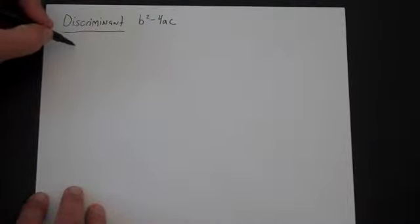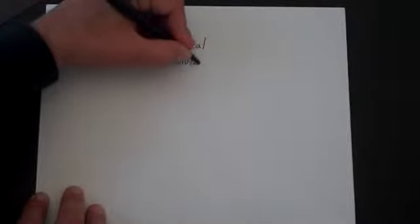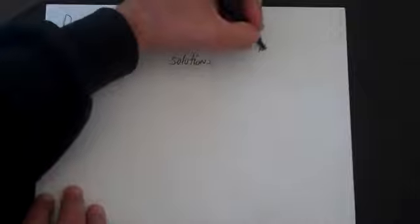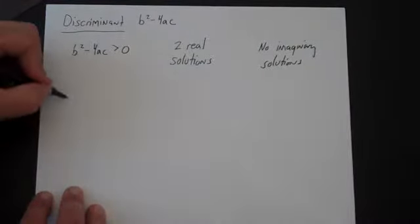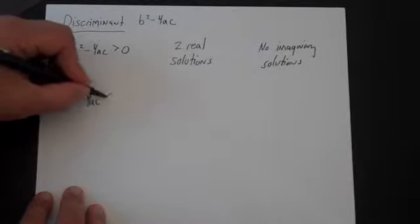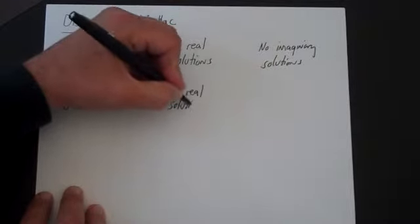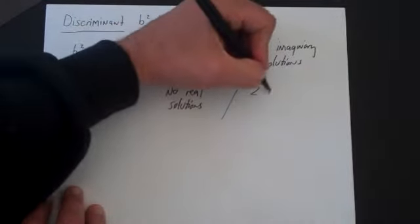And what we notice here is that we have certain rules. So if b squared minus 4ac is positive, then you're going to have two real solutions. And it turns out that if you have two real solutions, you have no imaginary solutions. If b squared minus 4ac is negative, then you're going to have no real solutions, and you're going to have two imaginary solutions.